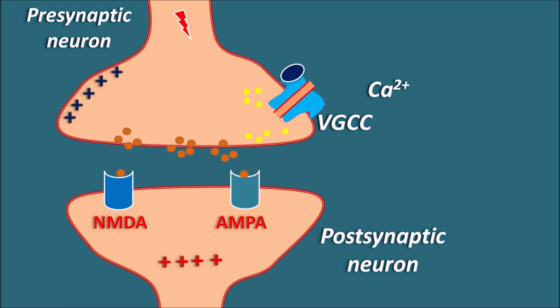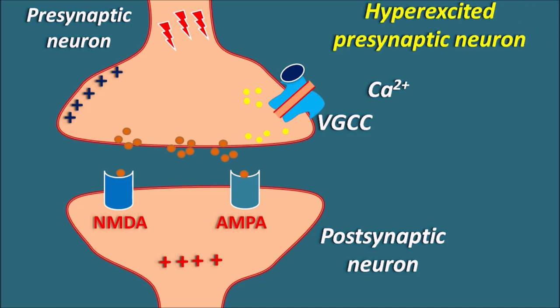But what happens in epilepsy and neuropathic pain? Whenever a greater number of impulses reach the presynaptic neuron, the presynaptic neuron will be in a hyper-excited state. This results in the activation of voltage-gated calcium channels, which open and cause more release of neurotransmitters. As more impulses reach the presynaptic neuron, more neurotransmitters are released, leading to abnormal postsynaptic neuronal excitation. This may be observed as excessive pain as well as increased epilepsy in patients.